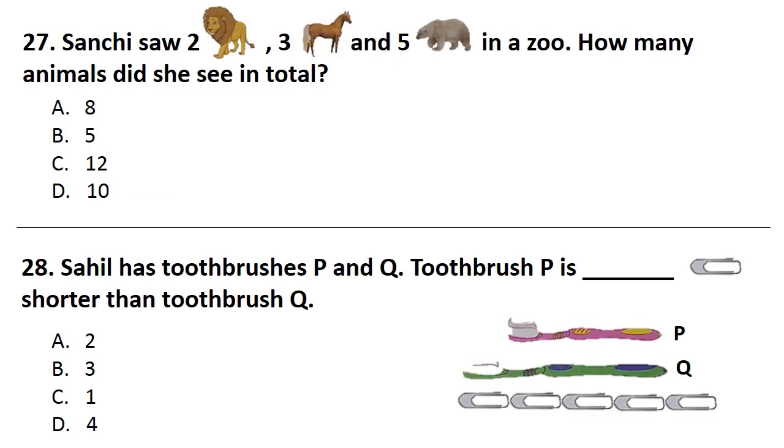Next question. Sachi saw 2 lions, 3 horses and 5 bears in a zoo. How many animals did she see in total? Answer is Option D. That is 10.